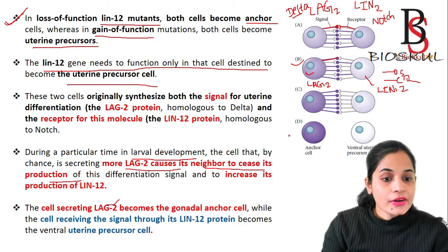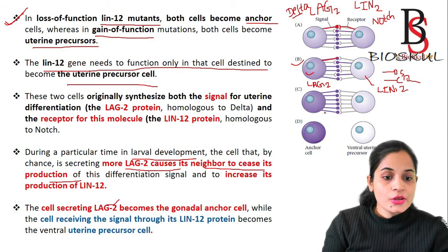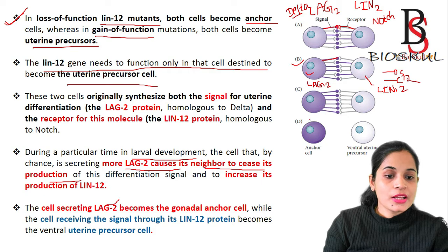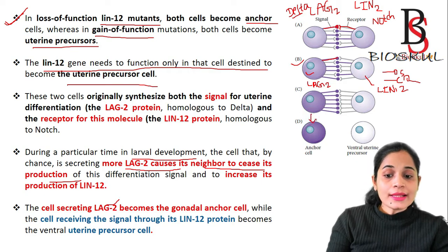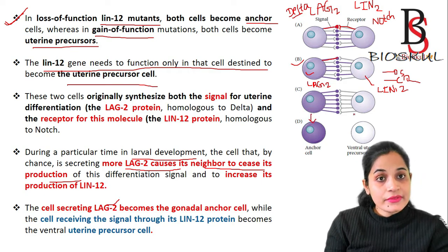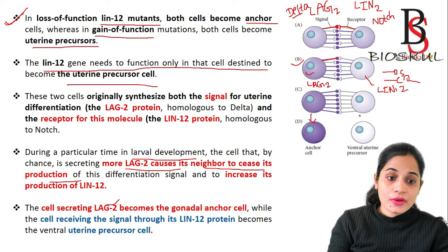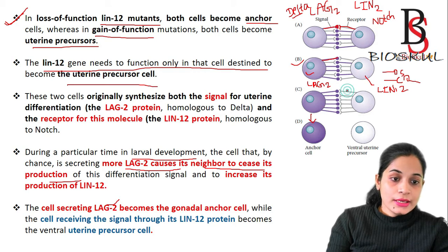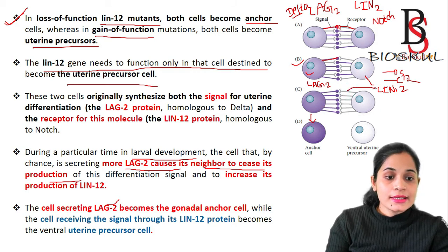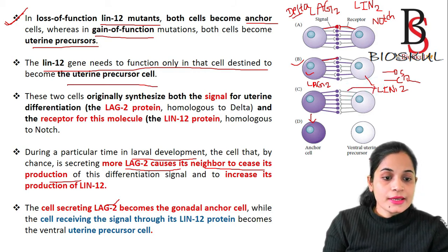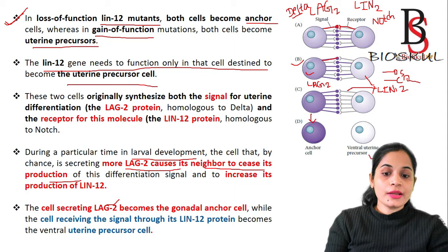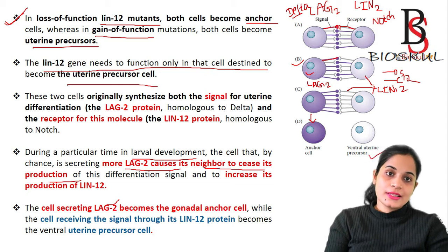The cell that secretes more lag-2 becomes the gonadal anchor cell. While the cell receiving the signal through the lin-12 protein differentiates into ventral uterine precursor cells.